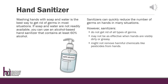Washing hands with soap and water is the best way to get rid of germs in most situations. If soap and water are not readily available, you can use an alcohol-based hand sanitizer that contains at least 60% alcohol. You can tell if the sanitizer contains at least 60% alcohol by looking at the product label. However, hand sanitizers do not get rid of all types of germs, may not be as effective when hands are visibly dirty or greasy, and might not remove harmful chemicals like pesticides from hands.